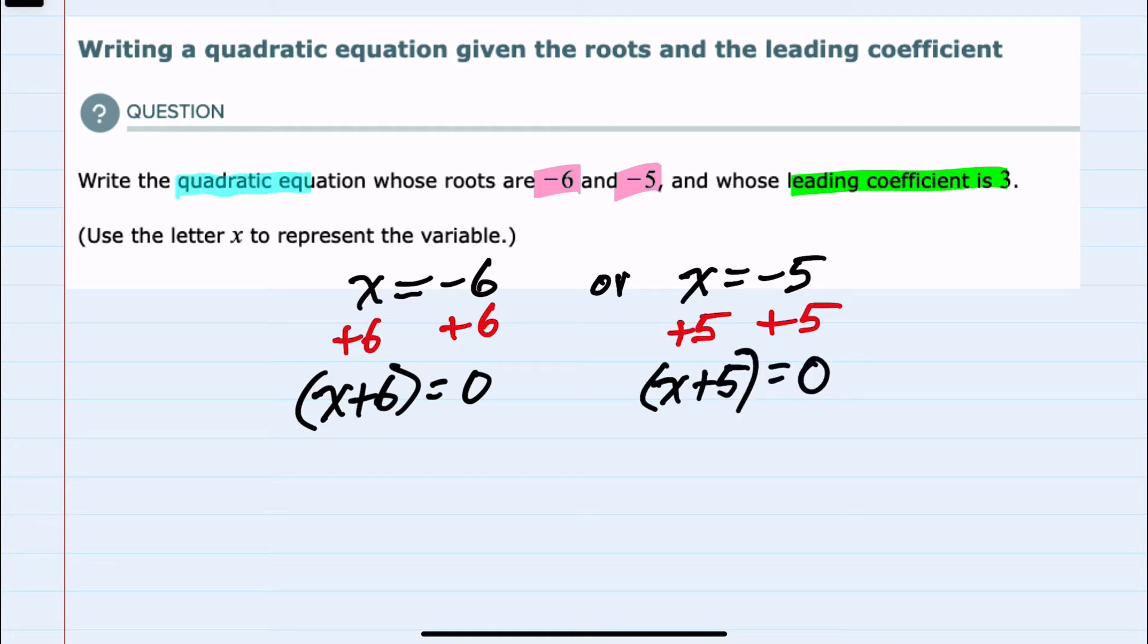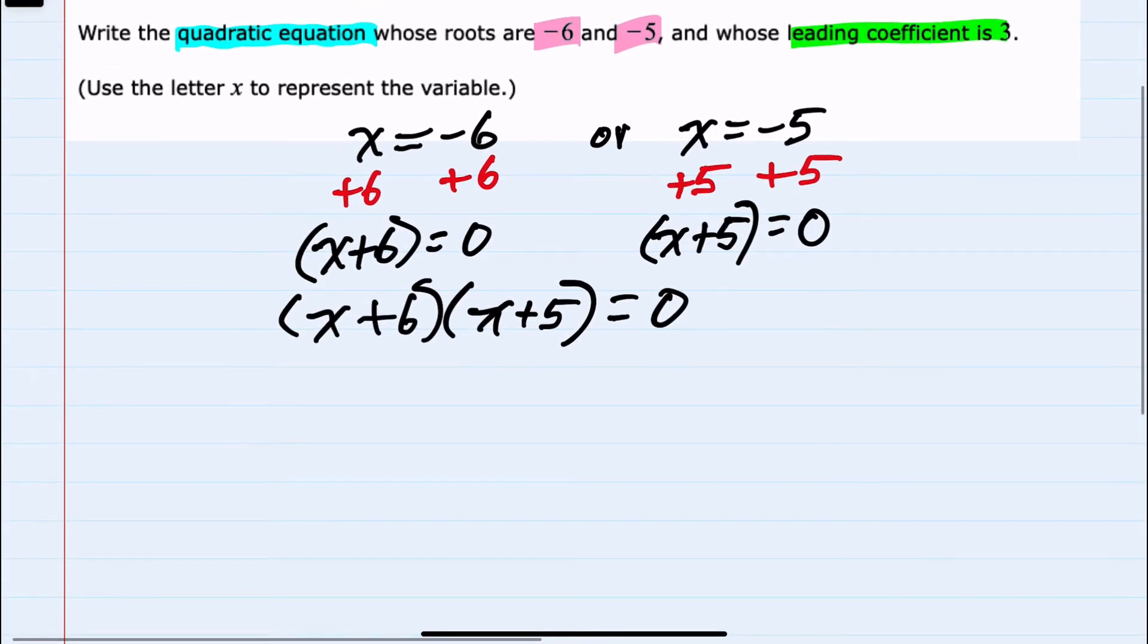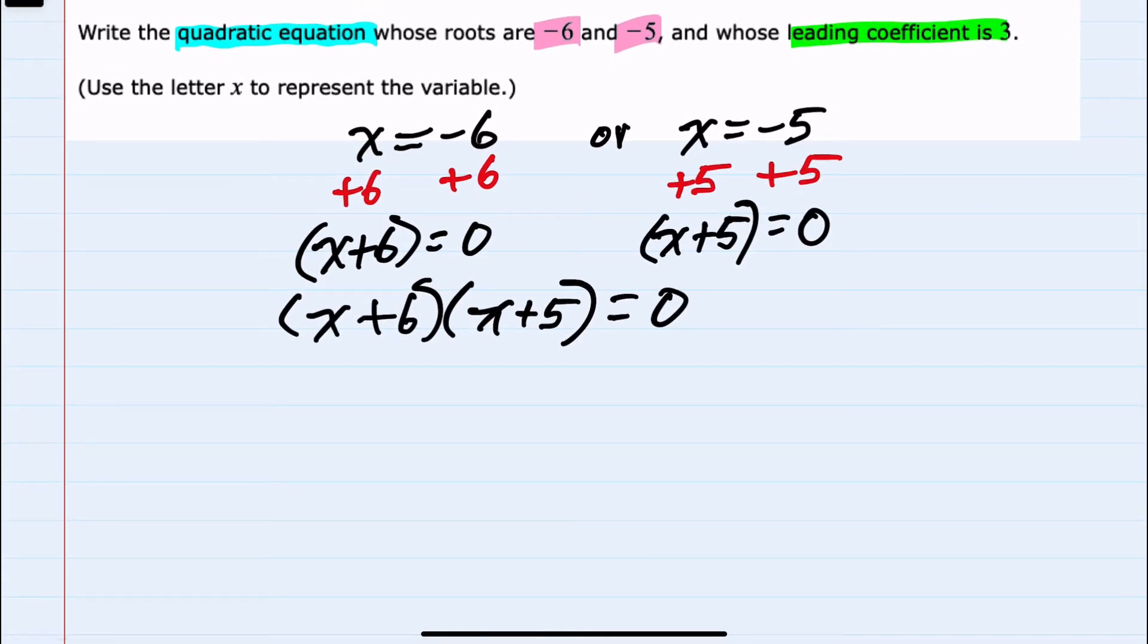Since we're working to create a quadratic equation, I have these x plus 6 equaling 0 and x plus 5 equaling 0. That means multiplying x plus 6 times x plus 5 would equal 0. From here we can see that we have a quadratic equation once we do the multiplication on the left-hand side.